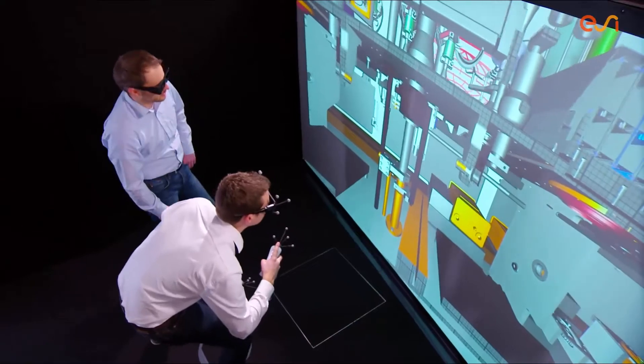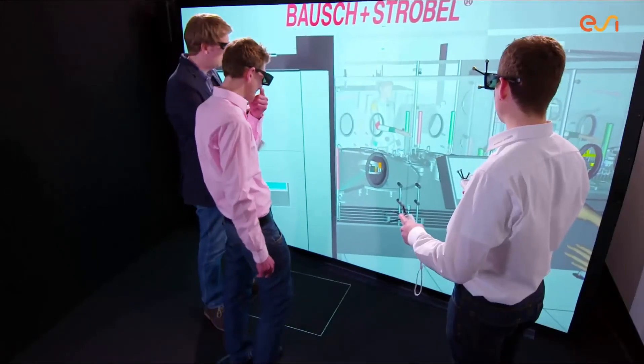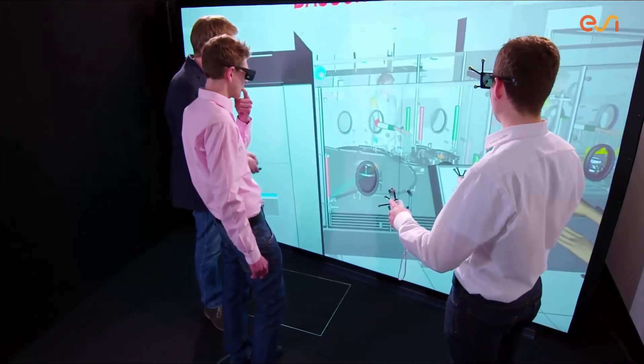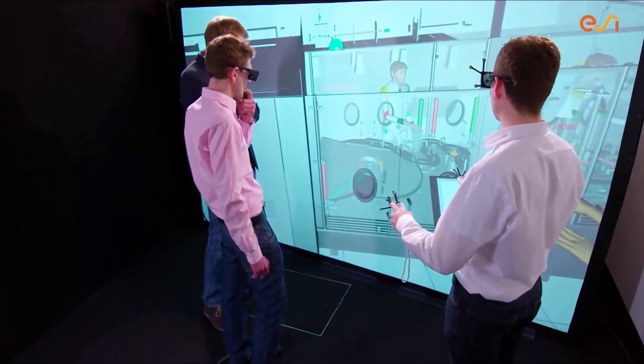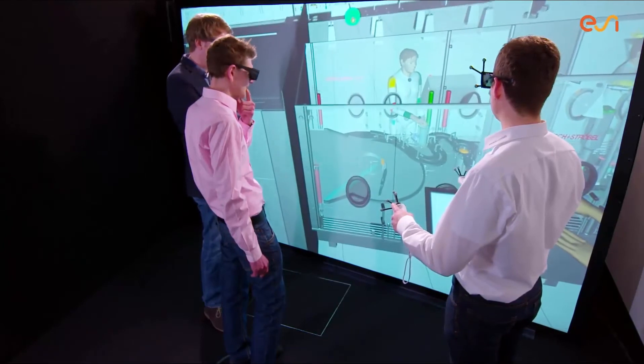Thanks to iSee iDo, production lines can be visualized and discussed with a customer in a very early stage of the development phase. This way, customer requirements can be analyzed and discussed in good time, which ultimately means that projects can be completed more quickly and result in higher quality products.